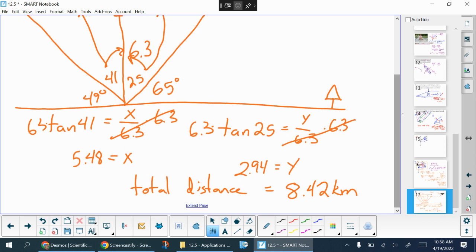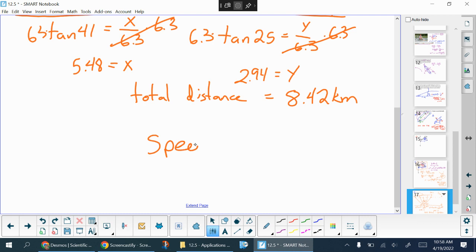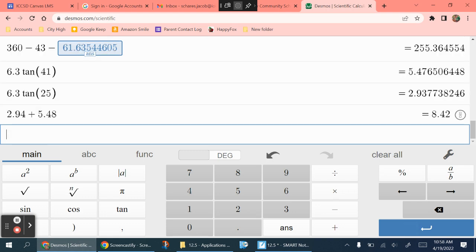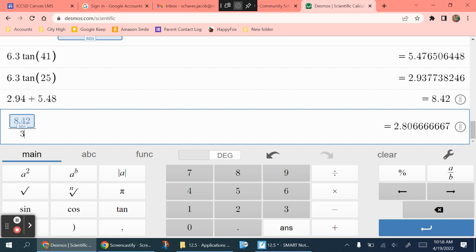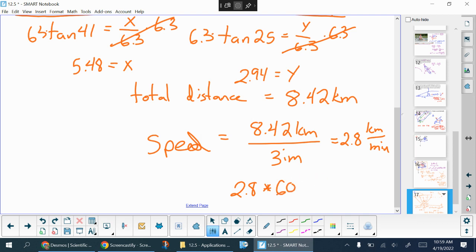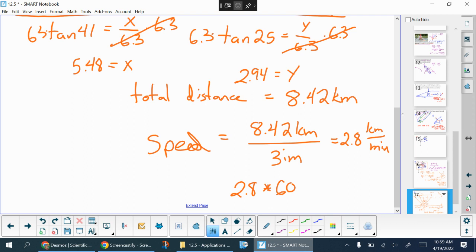That's my distance. Now to find speed. Remember, speed is just distance divided by how long it took you. It took us 3 minutes. So 8.42 divided by 3 minutes gives me 2.8. But that is in kilometers per minute. I don't want kilometers per minute. I want kilometers per hour. So if I have 2.8 kilometers per minute, I'm going to need to multiply by 60 because there are 60 minutes in an hour. So I'll just take that, throw a times 60 on the end. And I get 168 kilometers per hour.